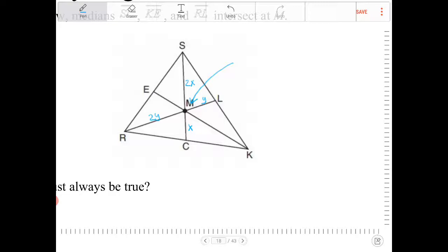Alternatively, you can also think of the full length of the median as being 3 times that of the distance going from the centroid to the opposite side. So let's say if I call this ME here length Z,